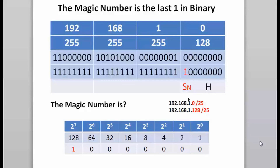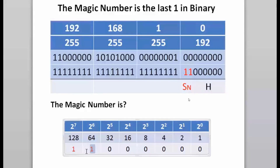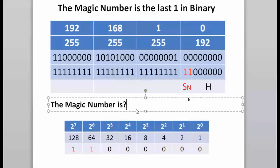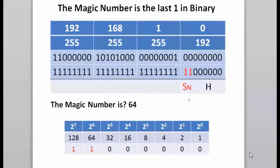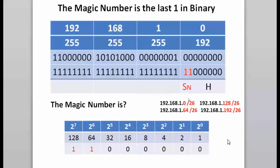With two bits borrowed from the host portion, the magic number is now the last binary one, which is in the 64's place. So the magic number is 64, and the networks will go up in increments of 64. The first subnet is always 0, so 192.168.1.0 slash 26, then the 64 subnet, then 64 plus 64 is 128, then 128 plus 64 is 192. There are only four subnets because we borrowed two subnet bits, and we can go no higher than 192 because 64 plus 192 is 256, which is too large.